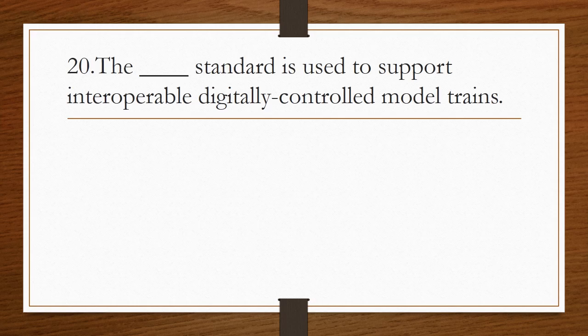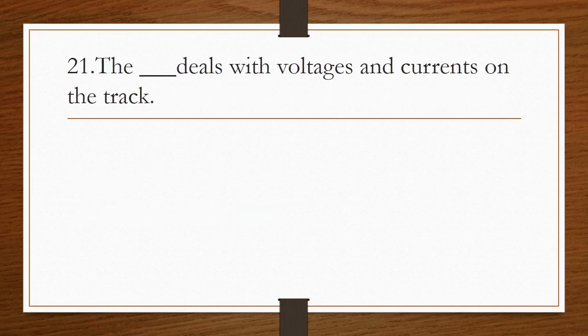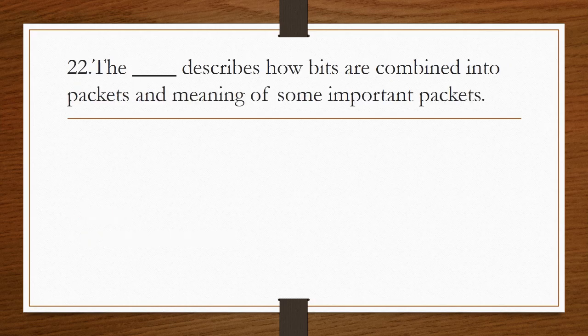The blank standard is used to support interoperable digitally controlled model trains. The answer is DCC, that is digital command control. The blank deals with voltages and currents on the track. The answer is DCC electrical standard. The blank describes how bits are combined into packets and meaning of some important packets. Answer is DCC communication standard.